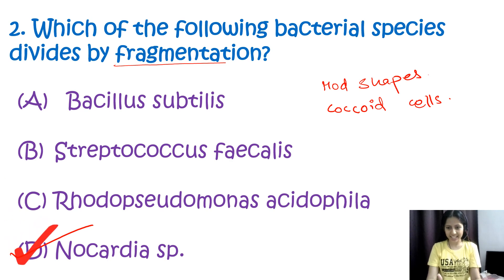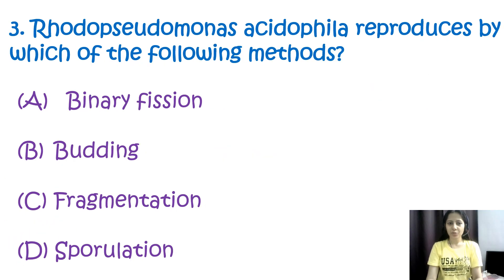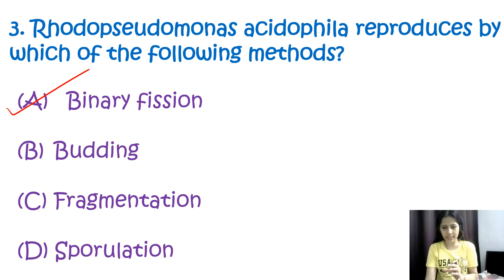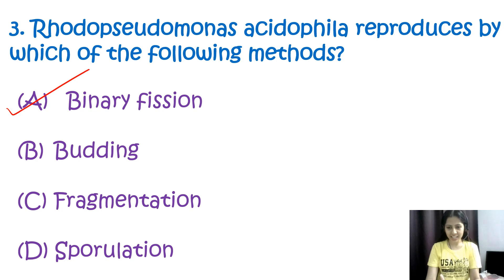Question number three: Rhodopseudomonas acidophila reproduces by which of the following methods? Options are binary fission, budding, fragmentation, or sporulation. This Rhodopseudomonas acidophila basically reproduces by the binary fission method, where a single cell gets divided into two identical daughter cells. The correct option is A, binary fission.